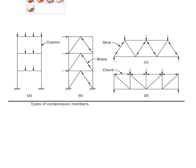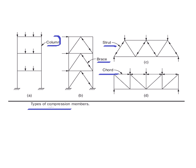These are the types of compression members. You can see the column, strut in a truss, braces in a frame, and chord members in a truss. These are the typical types of compression members.